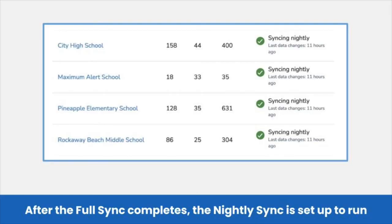Now let's go back and check our full sync. Once your first full sync is complete, you should see green circles with check marks indicating that Clever or Classlink and Seesaw were able to sync and that the nightly sync will run every night. The Last Data Changes information will update only when new data is found during the nightly sync — it does not indicate when the last sync ran. If the green check mark and syncing nightly status is visible, your sync is running nightly.